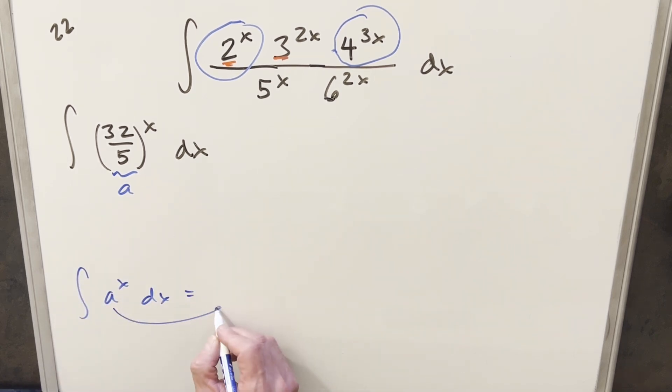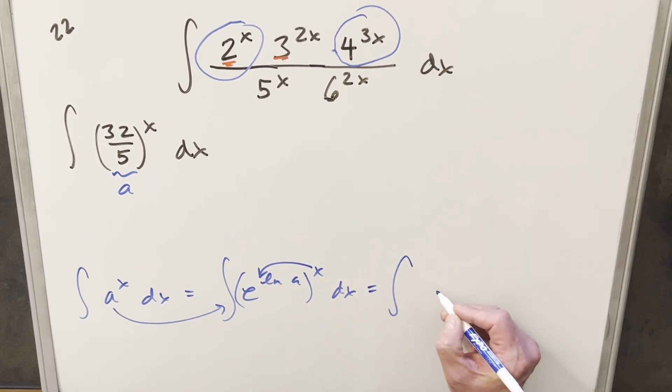What we can do with a is we can rewrite a as just e ln a. And so we still have this a to the x here. But then with exponent properties, we can just bring in the x and rewrite this again. So we're going to have this as e ln a times x dx.